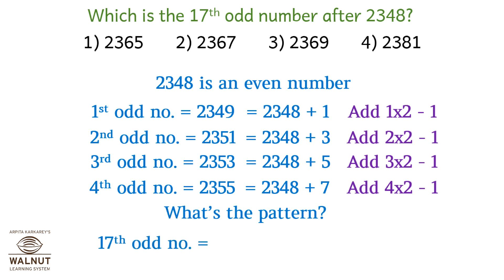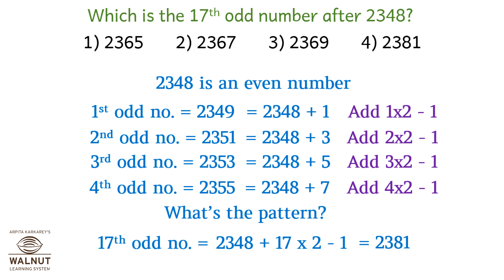So the 17th odd number after 2348 is 2348 plus 17 into (2 minus 1), which equals 2381. That is option 4.